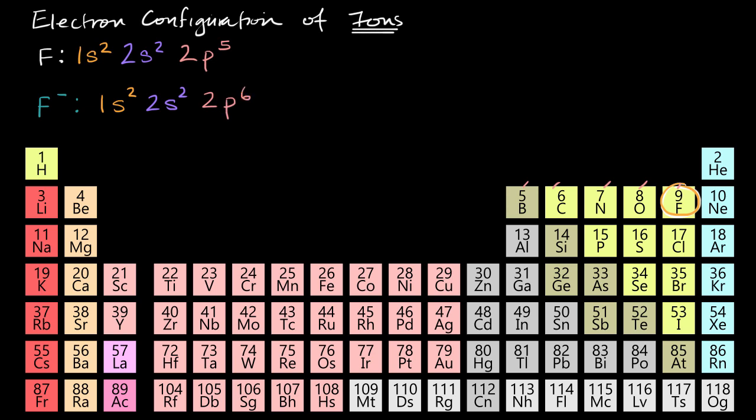Now let's do another example. Let's say we wanted to figure out the electron configuration of a positively charged calcium ion. So calcium, let's make it 2+, so it has a positive charge of 2. So this is, you could view this as a neutral calcium that has lost 2 electrons. What would be its electron configuration? Pause this video and try to figure that out.